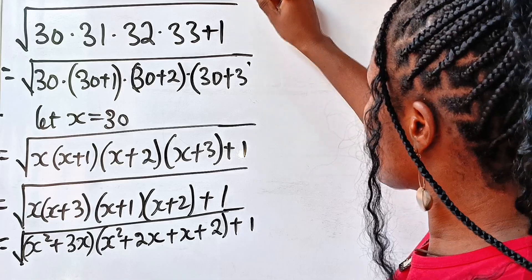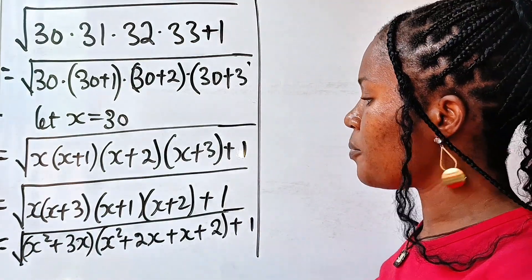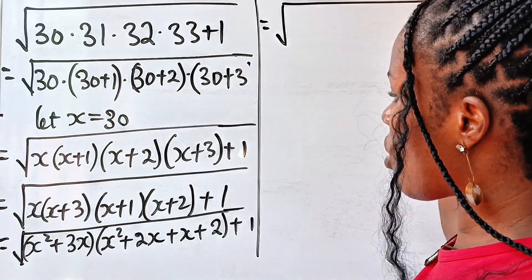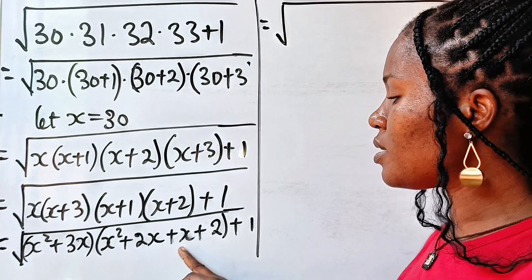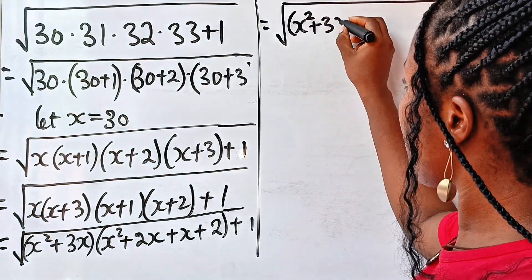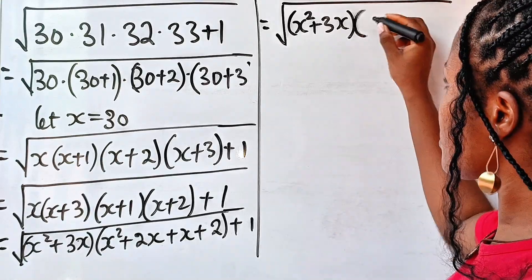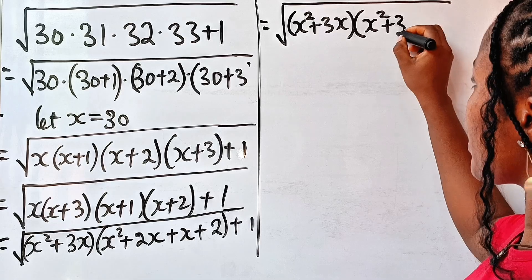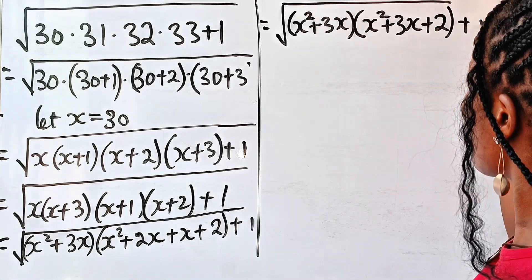I don't know if you can see this clearly, but this is what we have here, which I believe you can see. So this is equal to the square root of, when you look at this, we can further simplify this one. So we have x squared plus 3x. Then brackets. We have x squared plus 2x plus x, we give us 3x again, plus this 2. Plus 1.